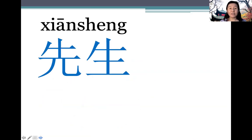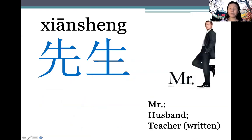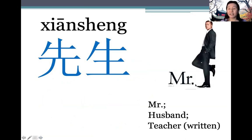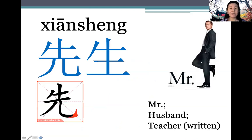If we're meeting someone who is male, how do we address him? 先生 (xiānsheng). Note that 生 is a neutral tone, so it's pronounced quietly. 先生 can mean 'mister', it can mean someone's husband, and in written form it can also be used to address a teacher.